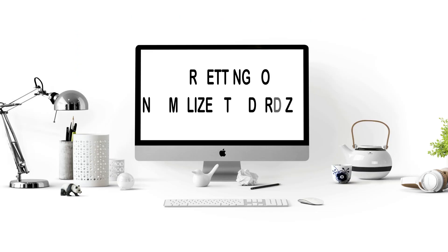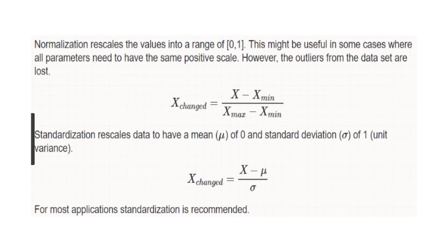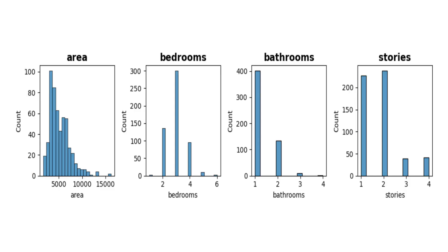Forgetting to normalize or standardize. Normalization and standardization are crucial steps that many beginners skip. When your features are on different scales — like house price prediction based on square footage versus number of bedrooms — your model can't learn effectively from the data.